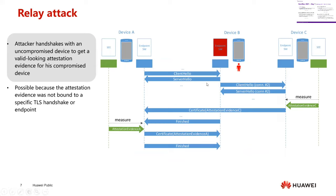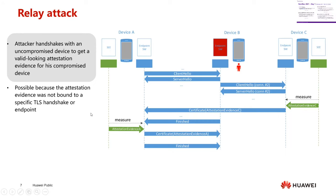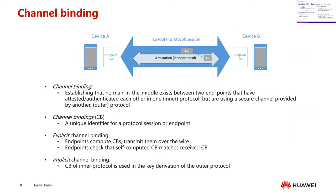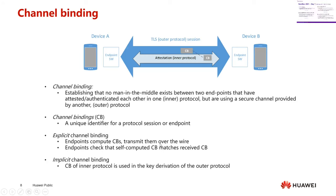But the problem with that approach is that there's no binding between the attestation evidence and the specific handshake. A man-in-the-middle attacker can do a relay attack where he starts another connection with an uncompromised device, gets the evidence from that, and then presents this evidence as his own for a compromised endpoint. The tool for preventing that is called channel binding. In general, if you have two protocols — an attestation protocol and a secure channel protocol — channel binding ensures that the endpoints in both protocols really are the same. Typically you compute a unique identifier for the protocol session, called channel bindings, and both endpoints compare that they computed the same value.